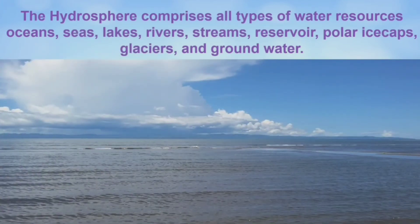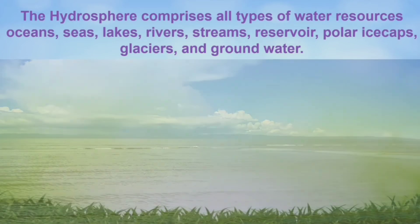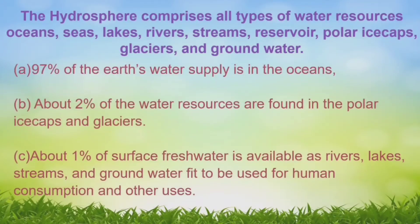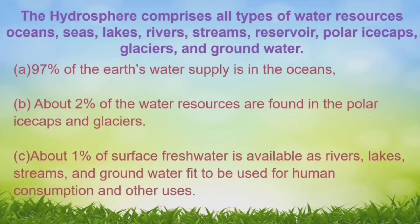The hydrosphere comprises all types of water resources like oceans, seas, lakes, rivers, streams, reservoirs, polar ice caps, glaciers, and groundwater. 97% of the earth's water supply is in the oceans. About 2% of water resources are found in the polar ice caps and glaciers. About 1% of surface freshwater is available as rivers, lakes, streams, and groundwater fit for human consumption and other uses.